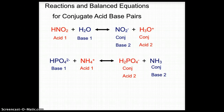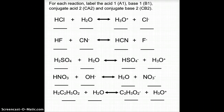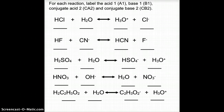Here we have five examples of chemical equations using conjugate acid and base pairings. In each case you're going to label the acid as A1, the base as B1, the conjugate acid as CA2, and the conjugate base as CB2. If you're using the SOFIA tutorial there is a PDF of this worksheet you can fill in, or use a separate sheet of paper. Go ahead and turn off the video now, fill in that information, and check back when you've completed your work.